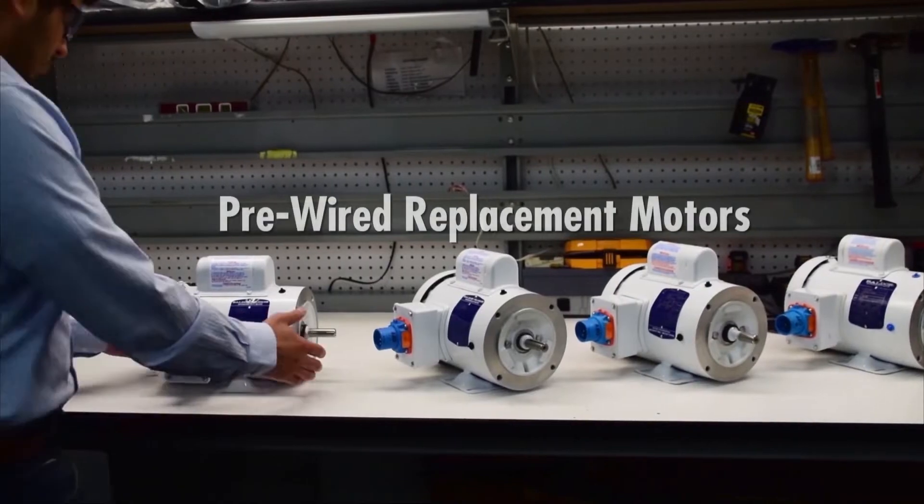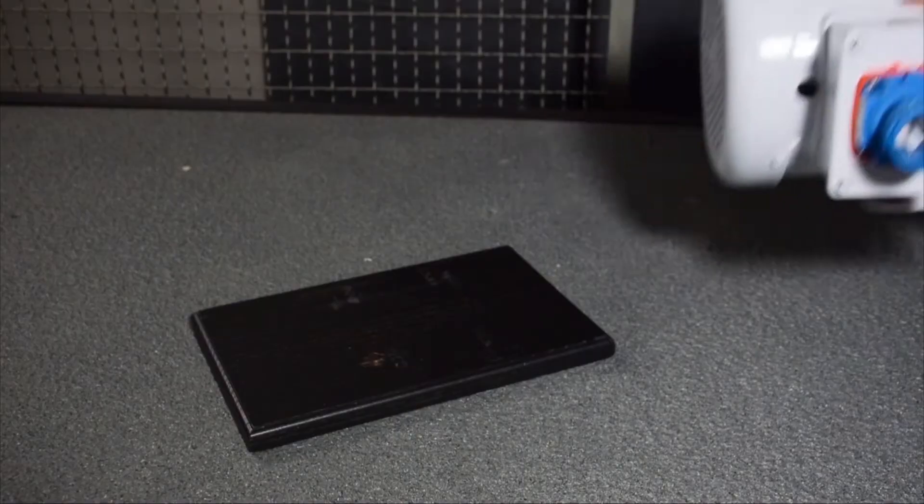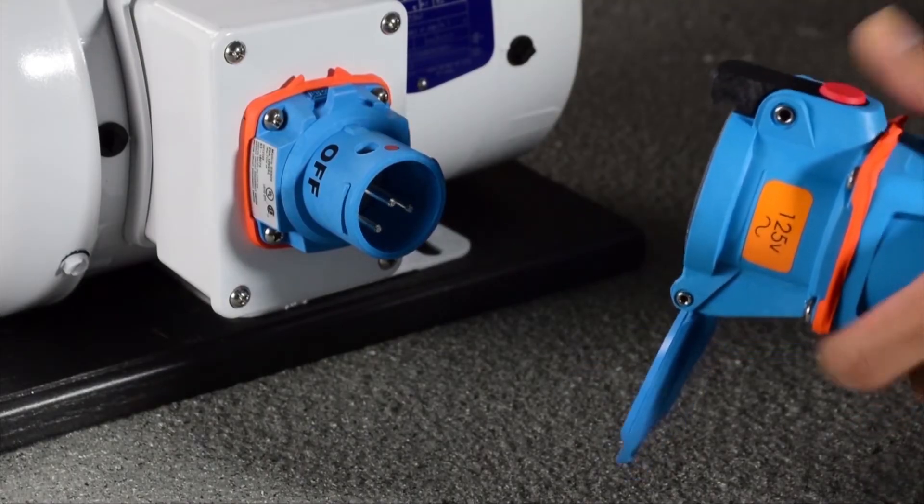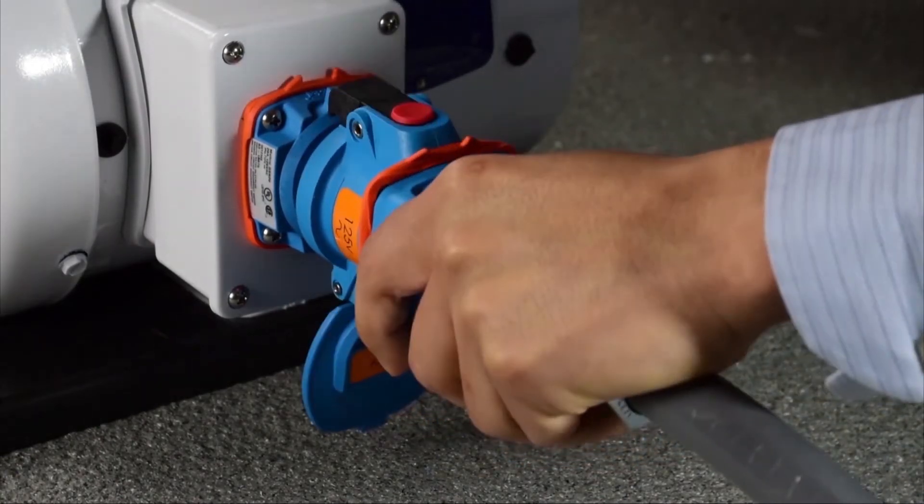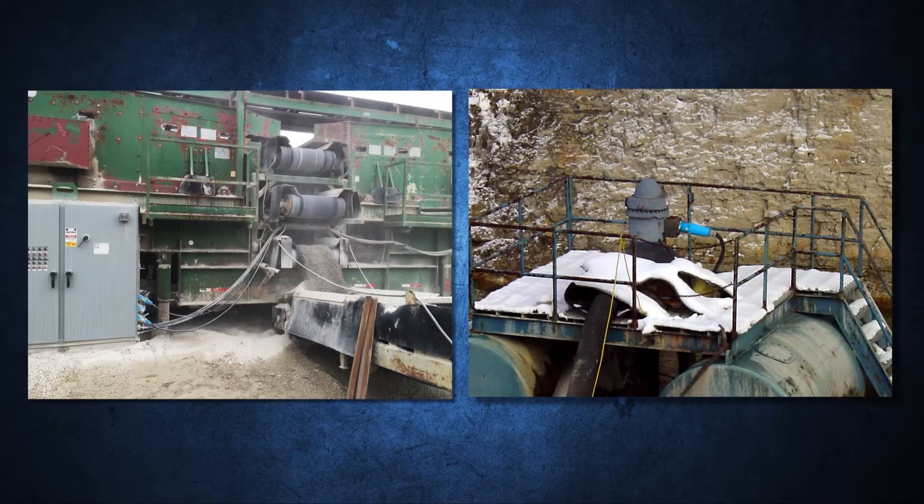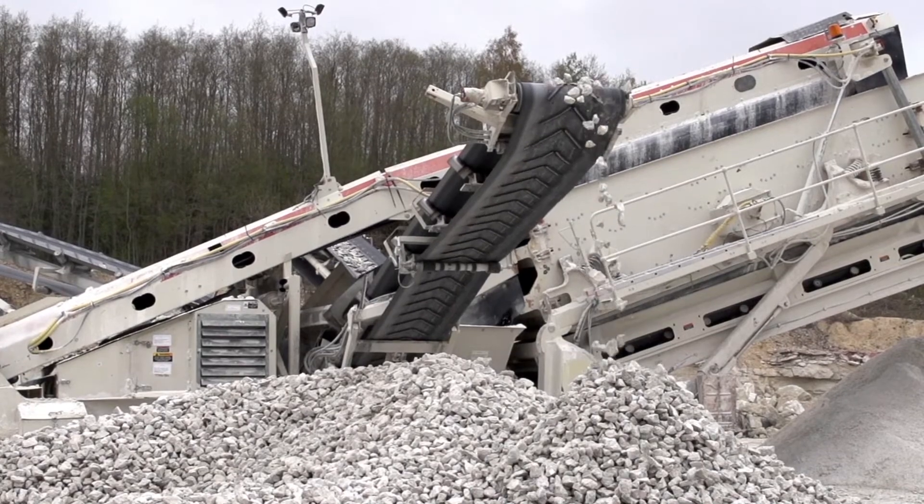When Meltrix switch rated plugs and receptacles are installed, downtime critical motors can be replaced with plug-and-play simplicity, allowing conveyor lines or portable pumps to be up and running in a matter of minutes instead of hours.